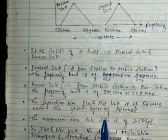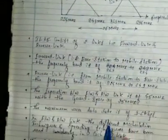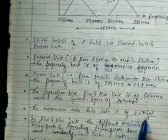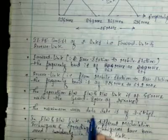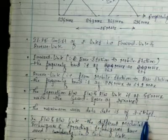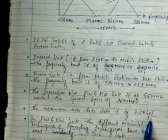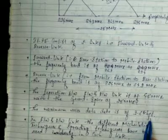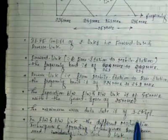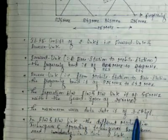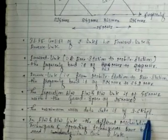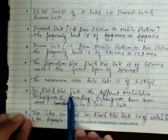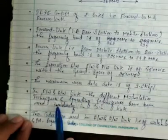One more important point: the maximum user data rate in IS-95 is 9.6 kbps. Converting this, 9.6 kbps equals 9600 bits per second. That is the maximum user data rate. Additionally, different modulation techniques and spreading techniques are used in the forward and reverse links.